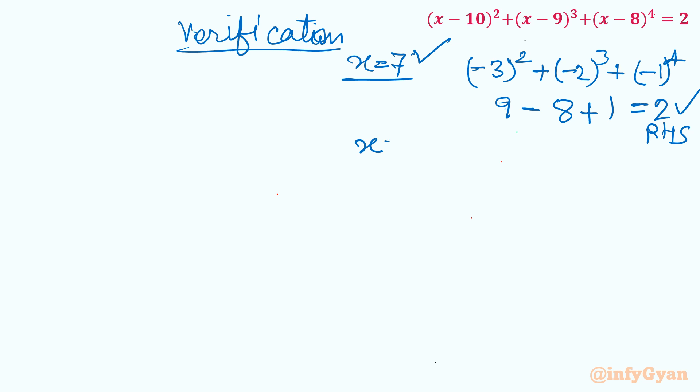Now come to x = 9. 9 - 10, (-1)², 9 - 9 is 0, no need to write, plus 9 - 8, 1⁴. (-1)² is 1, 1⁴ is 1, RHS is 2 which is our simplification. So this is also true. If you want to check the third and fourth also, it is verifying the equation. I have cross checked.